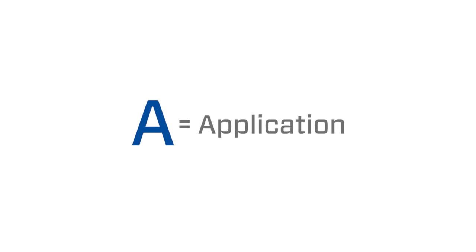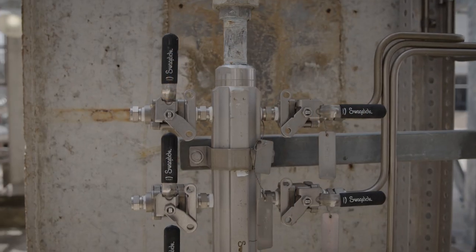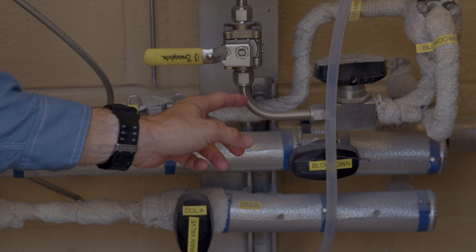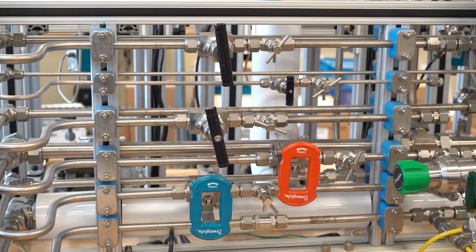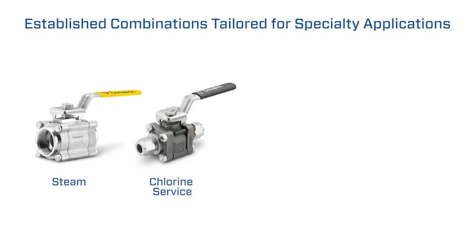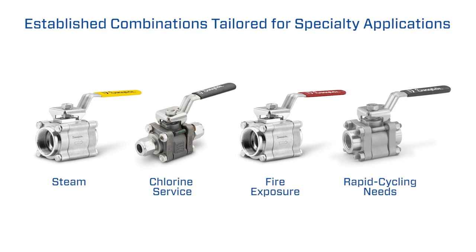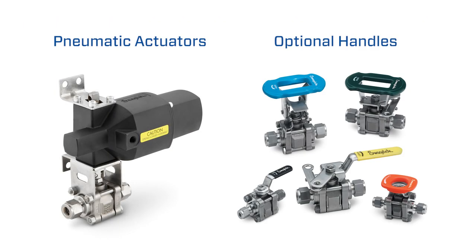Next, think about the nuances of your application. The variety of sizes and component materials makes the Swagelok 60 series valve configurable for many industrial applications. There are also established combinations tailored for specialty applications such as steam or chlorine service, fire or extreme temperature exposure, and rapid cycling needs. Pneumatic actuators and optional handles are also available to meet different actuation needs.